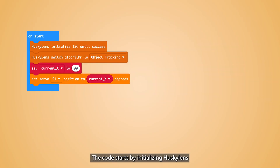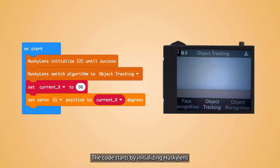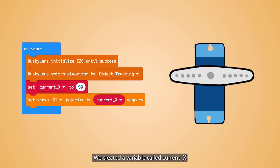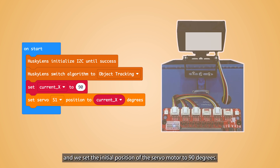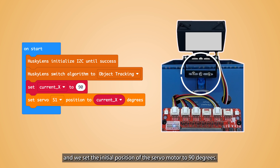The code starts by initializing HuskyLens to use the object tracking algorithm. We created a variable called currentX to keep track of the servo motor position, and we set the initial position of the servo motor to 90 degrees.